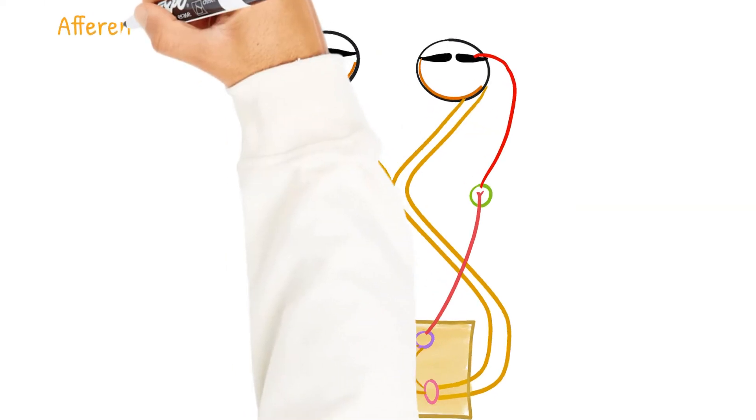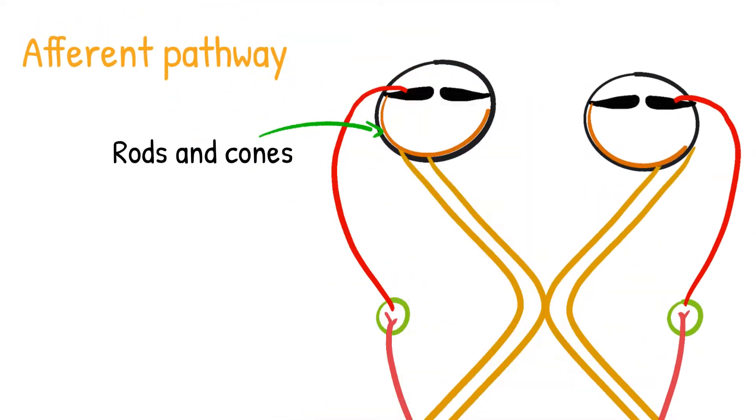Let's first discuss the afferent pathway. The outer segments of the rods and cones are the receptors for both the visual pathway and the light reflex.